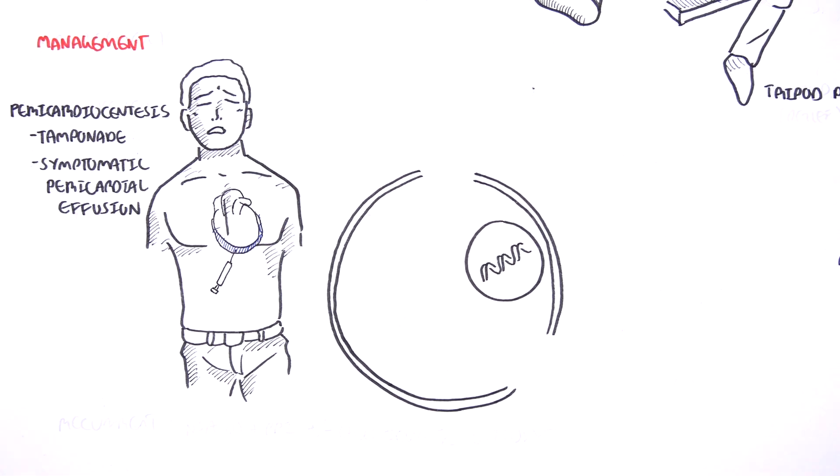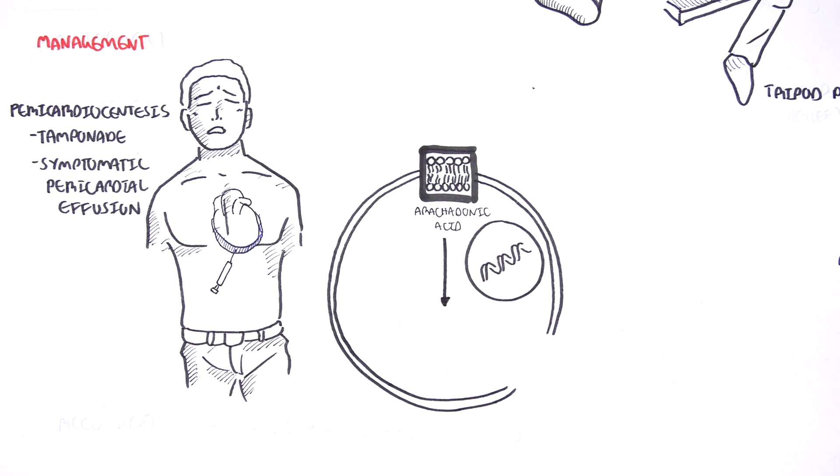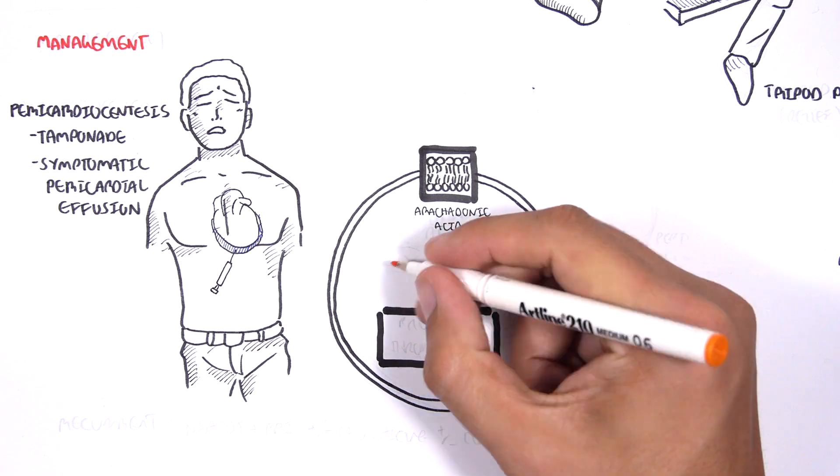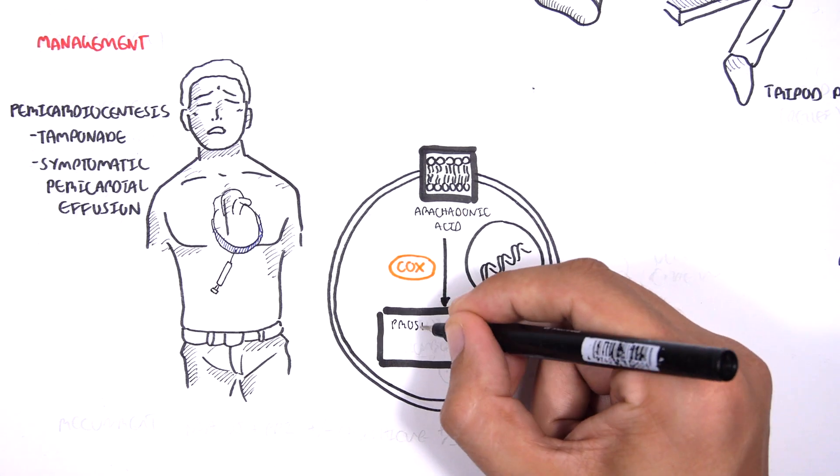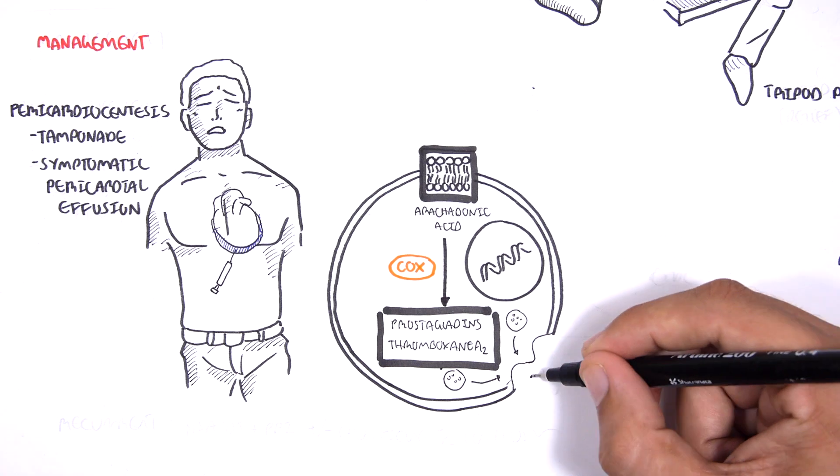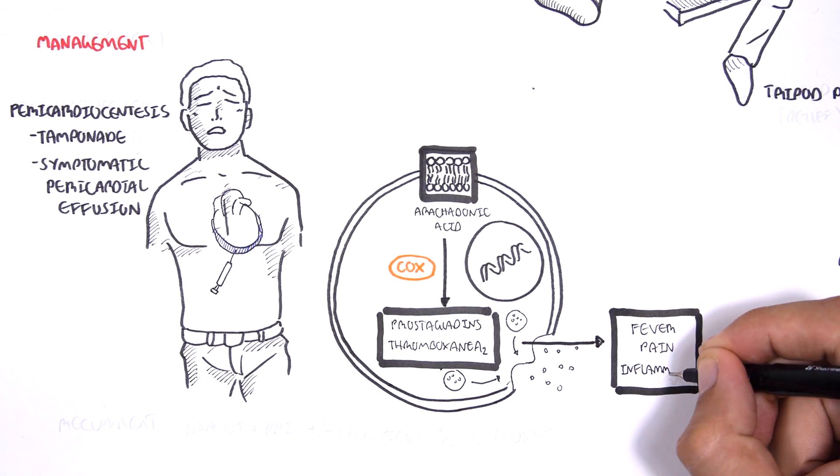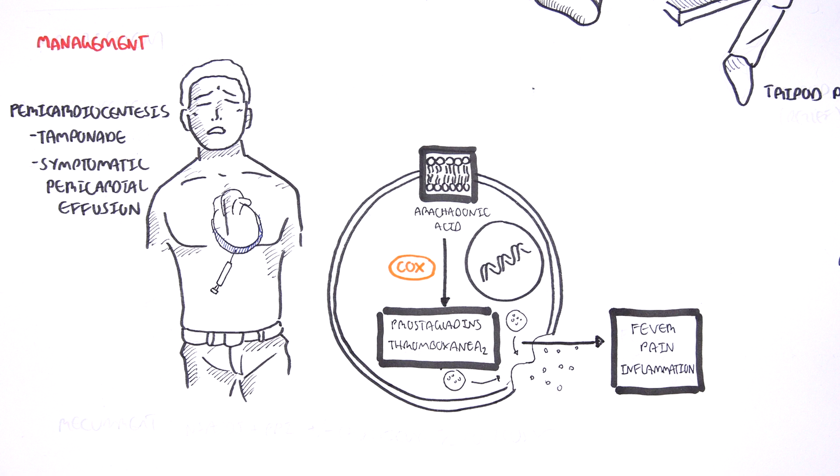In pericarditis, inflammation occurs because arachidonic acid is formed through phospholipids on cell membranes. The arachidonic acid produces prostaglandins and thromboxane A2, with the enzyme COX. These molecules contribute to the fever, pain, and inflammation in pericarditis.